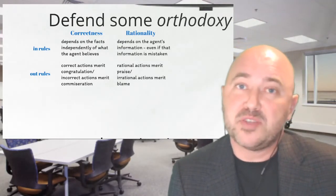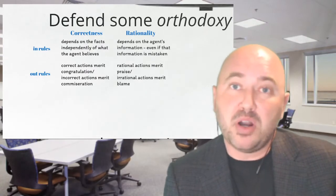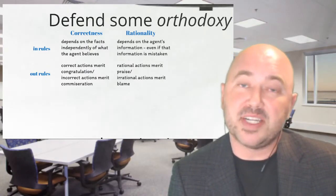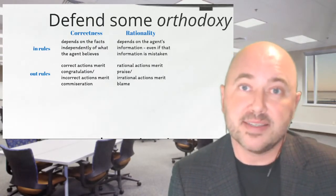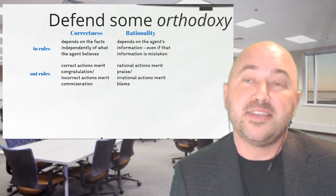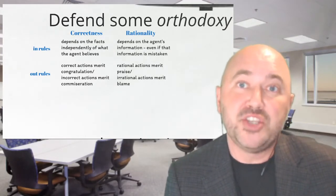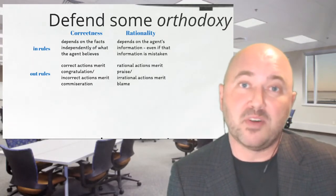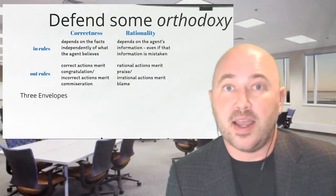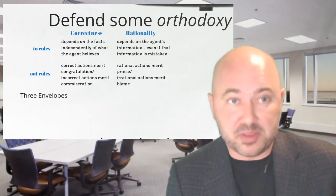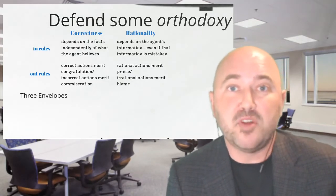So that's the orthodox picture. And if it's right, then rationality and correctness come apart because an agent's information comes apart from the facts. It's important that an agent's information comes apart from the facts in two importantly different ways. The first is brought out by what we call the three envelope problem.